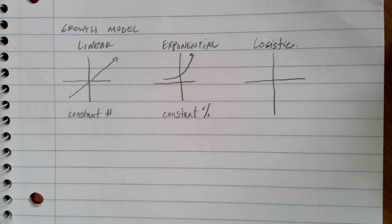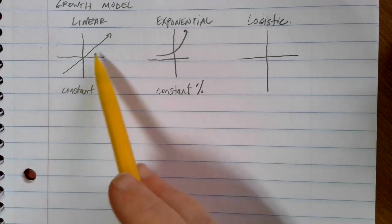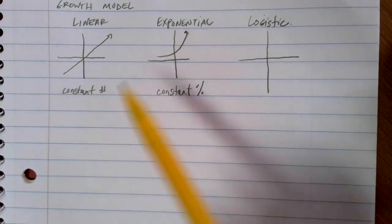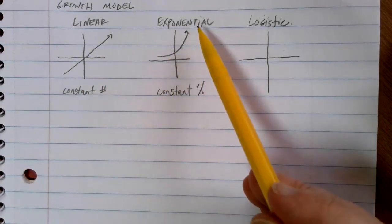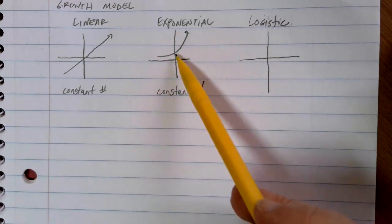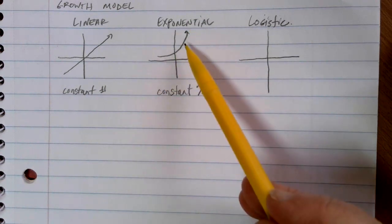So far in our class, we've been discussing growth models, and we've looked at several specific ones. We've looked at linear growth models, where every time we grow by a specific number. We've talked about exponential growth models, where for every time we're increasing by a constant percentage.